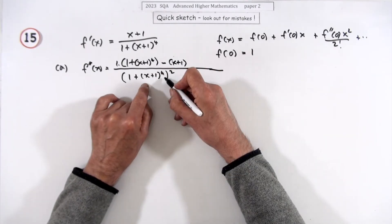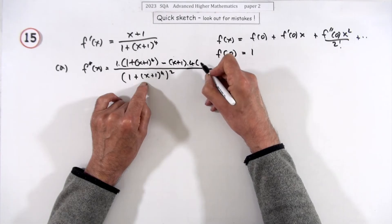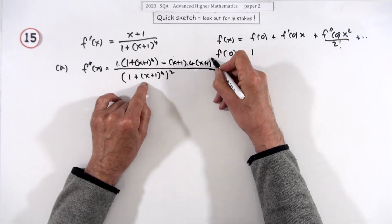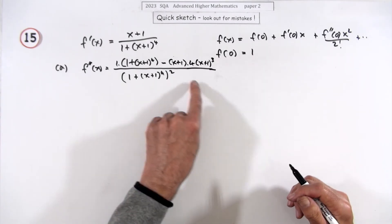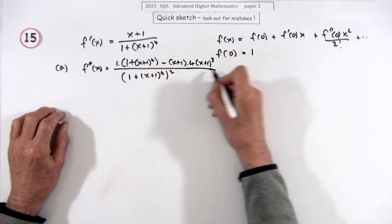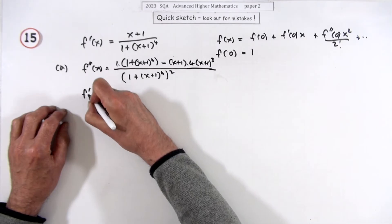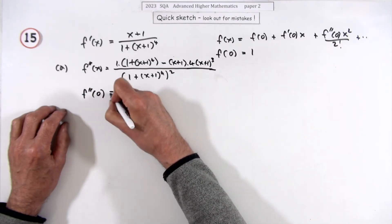Now differentiate the bottom, this part in here where the one goes, so that'll just be 4(x+1)³.